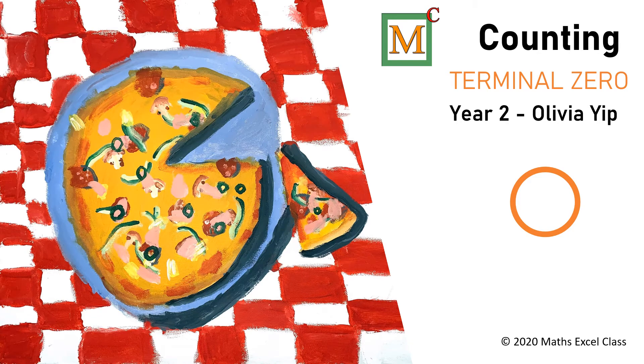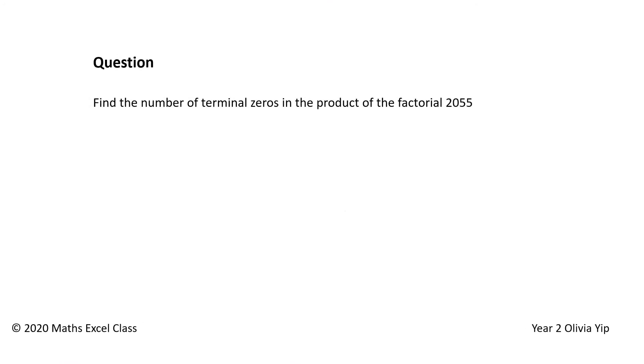Counting terminal zeros. Find the number of terminal zeros in the product of factorial 2055.